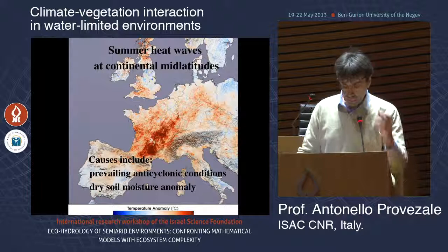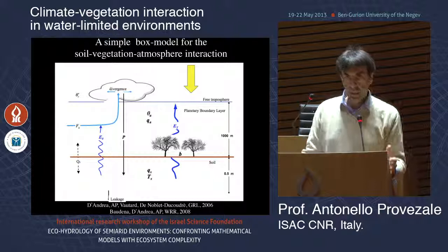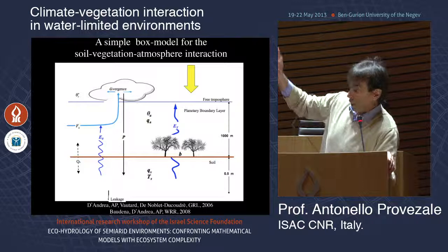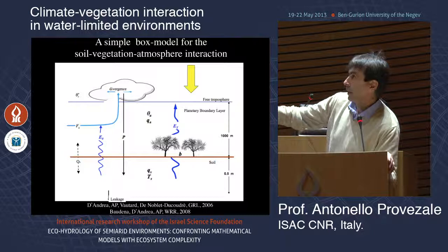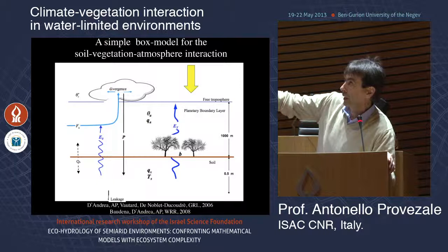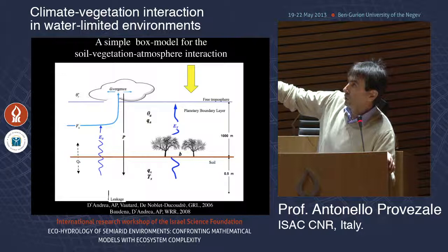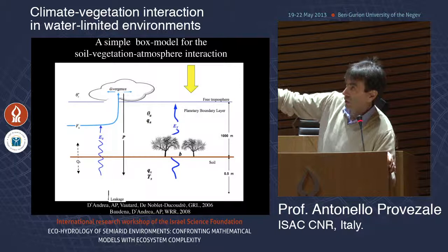Our contribution was to build a very simple model with basically five equations: moisture and temperature in the soil, relative moisture and potential temperature in the planetary boundary layer (roughly 1000 meters), and the biomass. You have all the relevant processes: radiation coming in, emission of latent heat through evapotranspiration, sensible heat, and radiation from the soil.